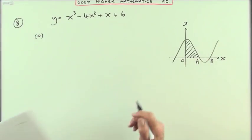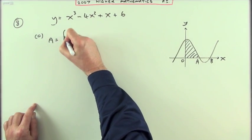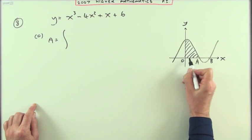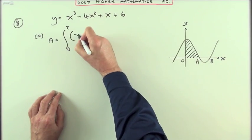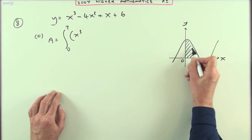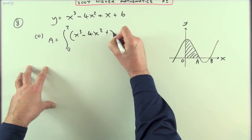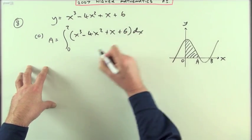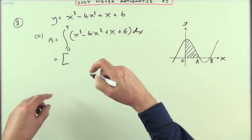Part c: Find the shaded area. Well, I know that cuts at 2 now, so the area I'm looking for is going to be the area starting at 0 and finishing at 2 of this expression here, that being the heights of little strips that are going to form that area. So x³ - 4x² + x + 6 dx.